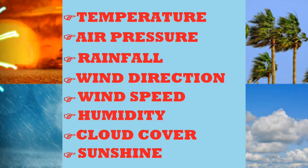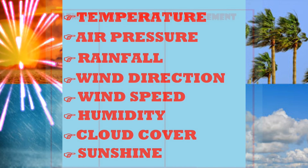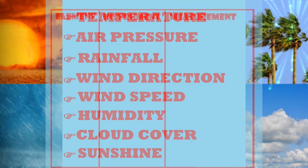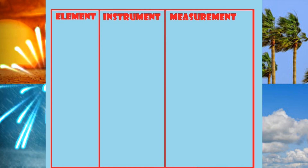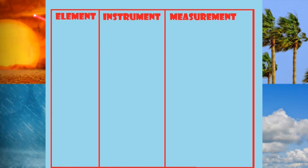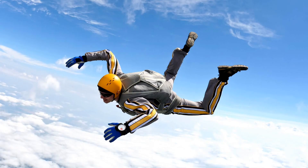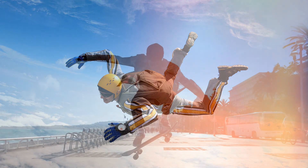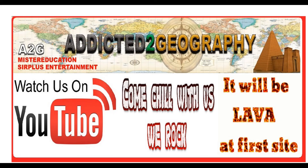And there you have it — all the elements of weather, all the instruments used to measure these weather elements, and the units of measurement. So in your table you would have three headings: Elements, Instruments, and Measurements. I hope you have learned a lot, and I hope you continue to excel in geography and continue being addicted to geography.